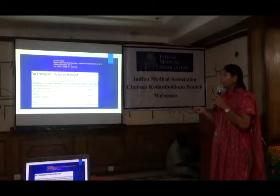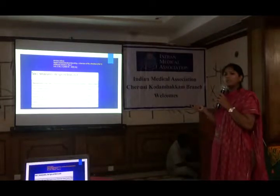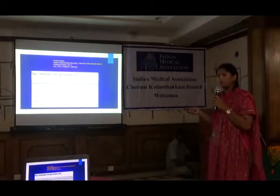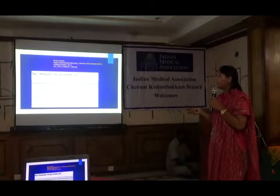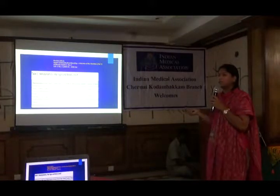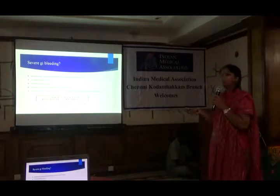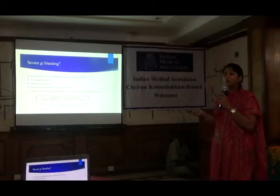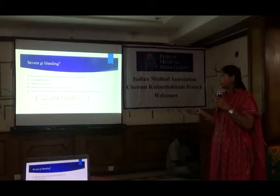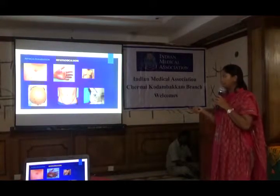On physical examination, we need to look at vitals — tachycardia and hypotension. Resting hypotension indicates a massive bleed requiring aggressive resuscitation. If it is only a minor bleed, there won't be any changes in pulse rate. A severe GI bleed is defined by shock or orthostatic hypotension, a drop in hemoglobin of at least 2 grams, or the patient requiring at least 2 units of blood transfusion.